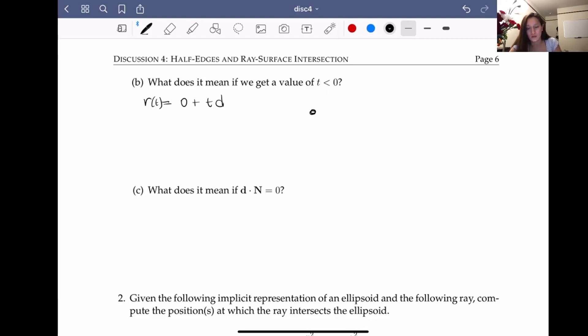And if T is greater than 0, then we're at some point that's along this direction D, because we're just multiplying a positive value by D and adding it to our origin. And if T is less than 0, that means it's in the opposite direction.